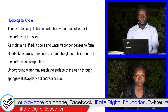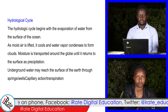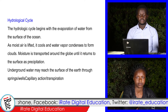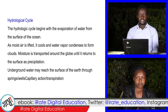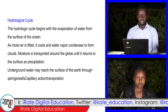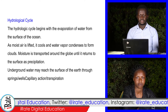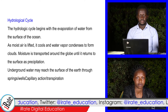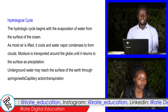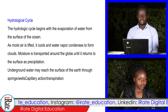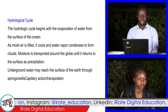The hydrological cycle begins with evaporation of water from the surface of the ocean. As moist air is lifted, it cools and water vapor condenses to form clouds. Moisture is transported around the globe until it falls to the surface as precipitation.